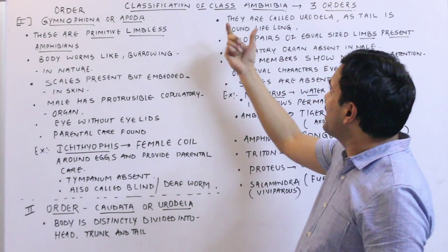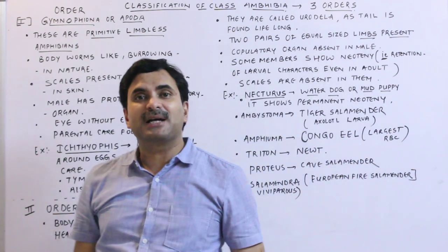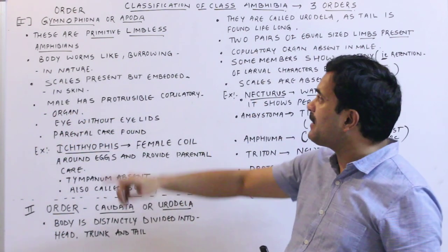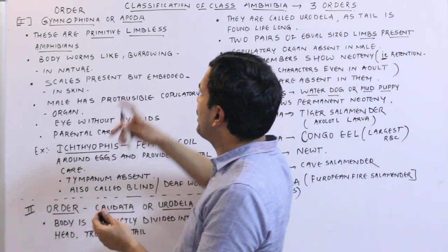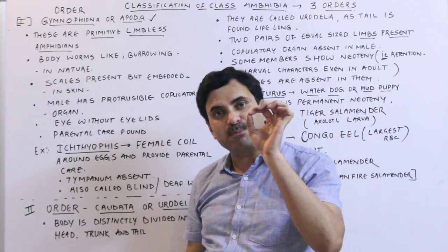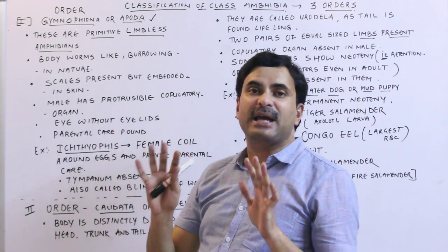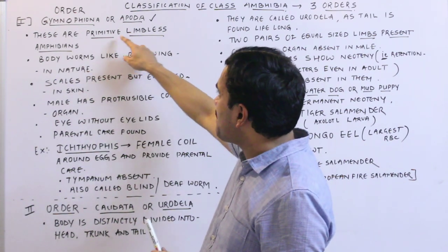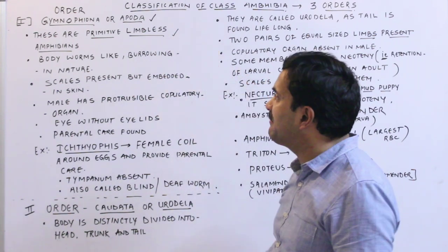Today we are starting with a very important topic: the classification of Class Amphibia. Class Amphibia is divided into three orders. The first order is Order Gymnophiona, also called Apoda. 'A' means absent and 'poda' means legs. This is the order of Class Amphibia where limbs are totally absent. They are primitive, limbless amphibians, and that's why they are called Apoda.